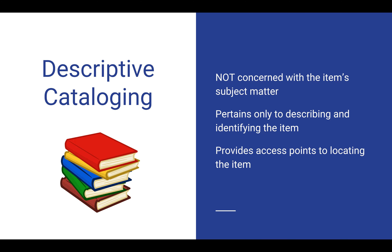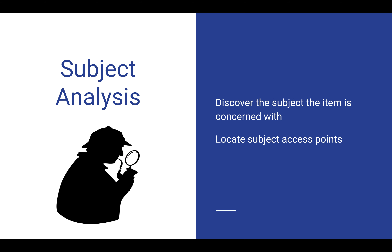In a nutshell, descriptive cataloging is not concerned about the item's subject matter — it only pertains to describing and identifying the item and provides access points to locating that item. Subject analysis is an action: when looking at a work, we gather all the information about the subject to create access points. Sometimes it's obvious, but sometimes it's hard work — examining historical documents takes a lot of detective work. Many genealogy items are recreated by family members and you have to dig to find the who, what, when, where, why, and create subject access points.